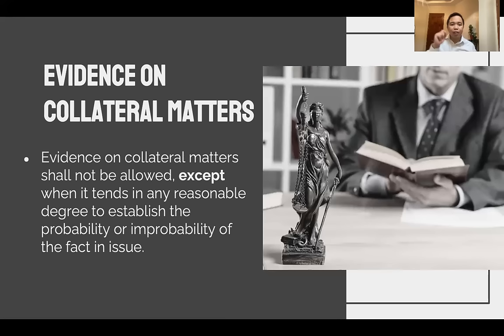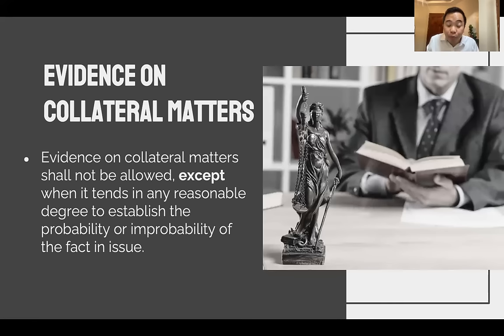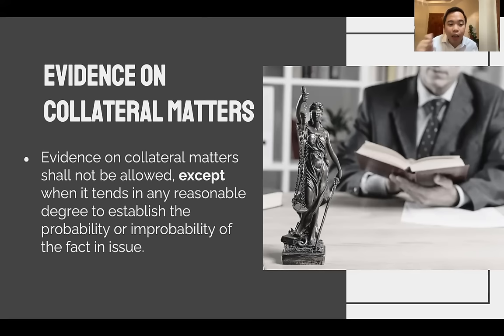For example, in the prosecution of a crime of murder, suppose there is a video of the accused biking in the United States of America, and the crime of murder happened in Manila. Is that video direct evidence that he did not commit the crime? It would appear it is not direct evidence, because he could have traveled back. But if the question is whether he could have committed the crime of murder, even though it is not direct evidence, the court may allow it — because if he was in America, it is not probable that he committed the crime of murder in Manila. So evidence on collateral matters is admissible if it will establish the probability or improbability of the fact in issue.